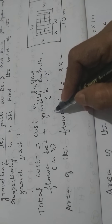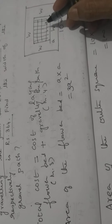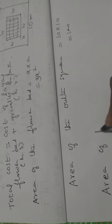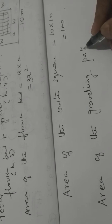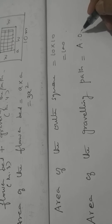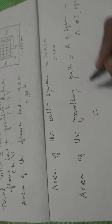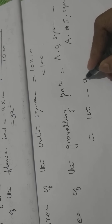For the graveling path, we need to find out: area of the graveling path equals area of the outer square minus area of the inner square. So area of the graveling path = 100 − A squared. Here O is for outer and I is for inner. Area of outer square is 10 × 10 = 100, minus area of the inner square (flower bed) = A squared.